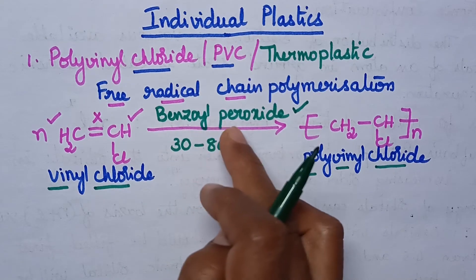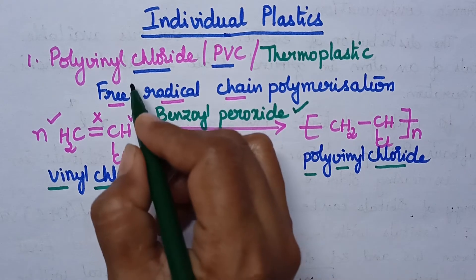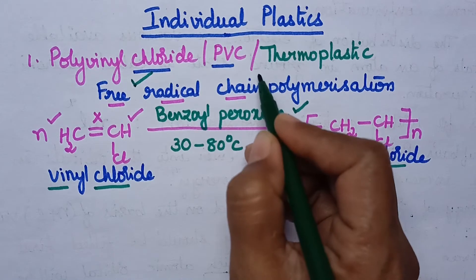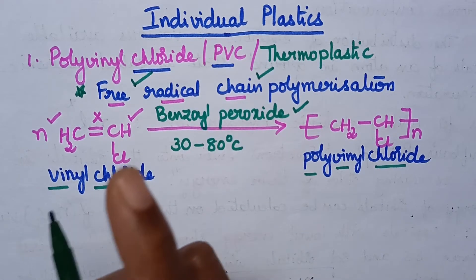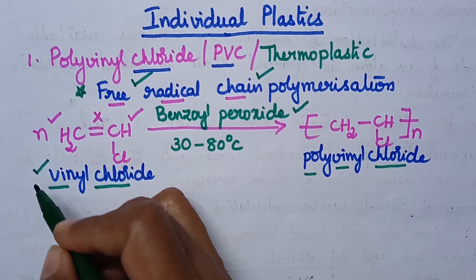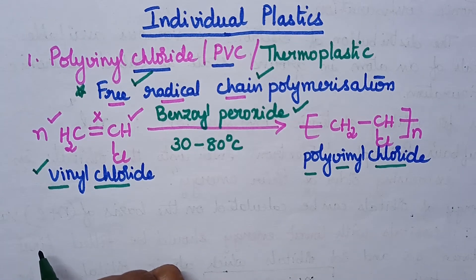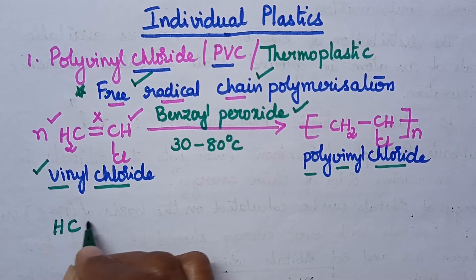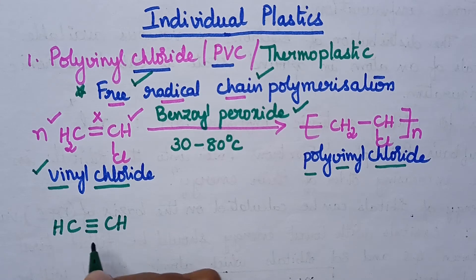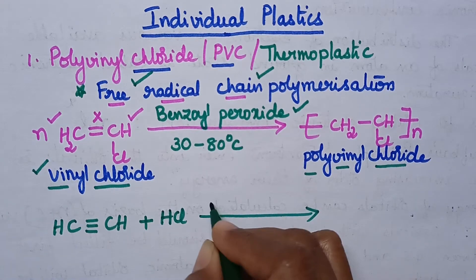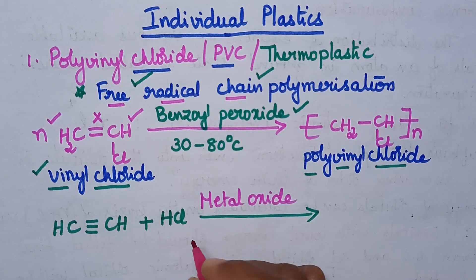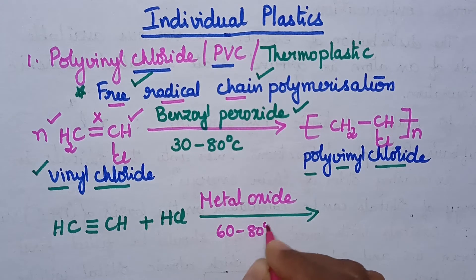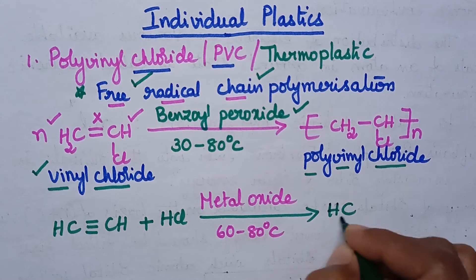Benzoyl peroxide dissociates into free radicals and hence by the attack of the free radical, chain initiation takes place and the reaction is called free radical chain polymerization. Always remember that vinyl chloride is not readily available, and hence vinyl chloride can be prepared from acetylene. The structure of acetylene is CH≡CH. Whenever acetylene is treated with HCl in the presence of metal oxide as the catalyst, when the temperature is maintained from 60 to 80 degrees centigrade, it results in the formation of vinyl chloride.